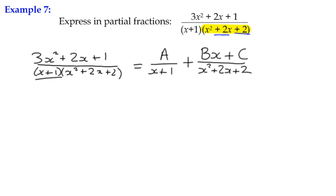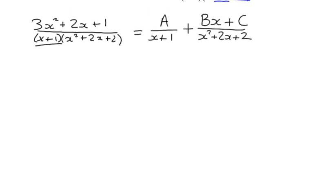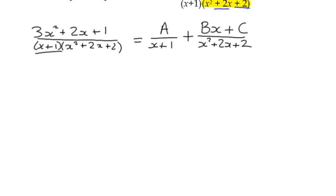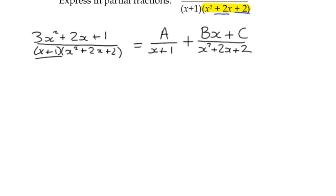And just to clarify that the x term in our numerator only occurs in these examples when we have an irreducible quadratic in our denominator. We can still multiply through, and everything else, basically, is the same as what we've come to do before.